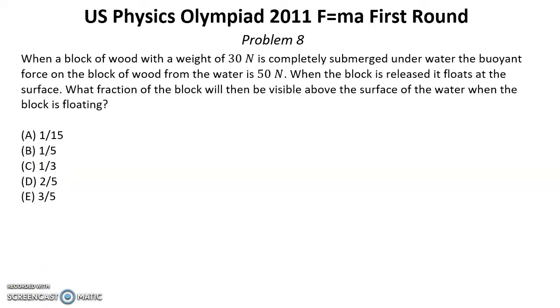Problem number eight. Solution for this problem you can find below this video in the reference for description. When a block of wood with a weight of 30 N is completely submerged under water the buoyant force on the block of wood from the water is 50 N. When the block is released it floats at the surface. What fraction of the block will then be visible above the surface of the water when the block is floating?